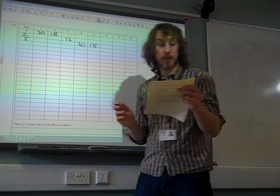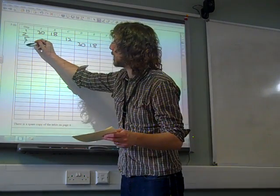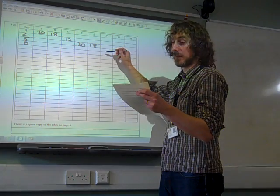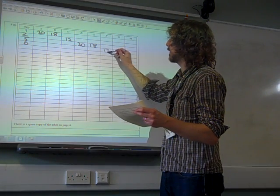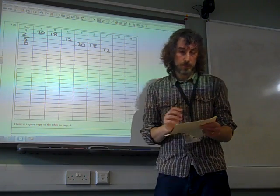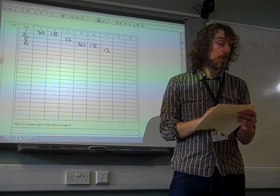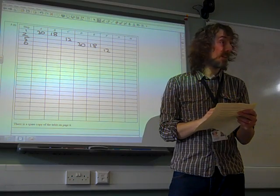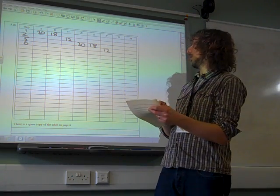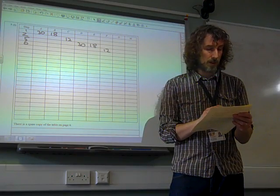Step six, let f equal d minus e. So we can do this. Step six, f is d minus e, 12. Step seven, if f is less than zero, f isn't less than zero. So we'll ignore that.